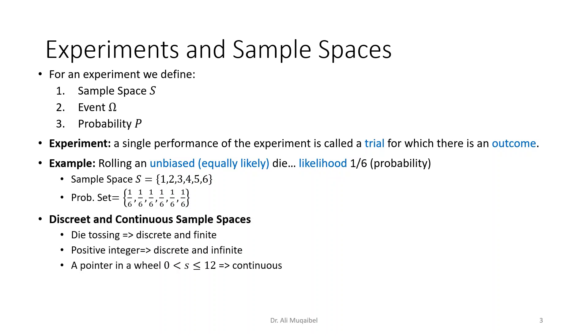Now we can define or we can characterize the sample space as being discrete or continuous. Like when you toss a die, you have discrete outcomes and they're finite because we have from one to six.